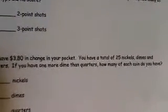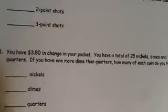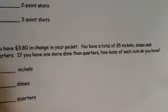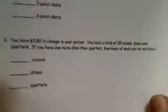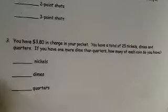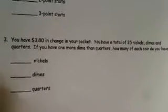This one deals with money. You have $3.80 in change in your pocket. You have a total of 25 nickels, dimes, and quarters. If you have one more dime than quarters, how many of each coin do you have? We can actually turn this into three equations. And as you know, you're not required to do these by hand — you can use a graphing calculator.